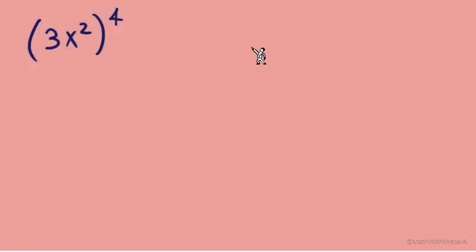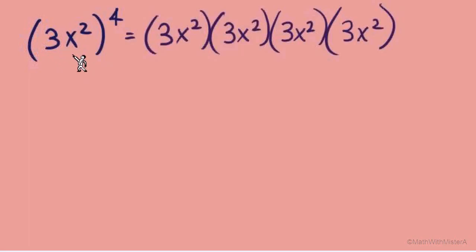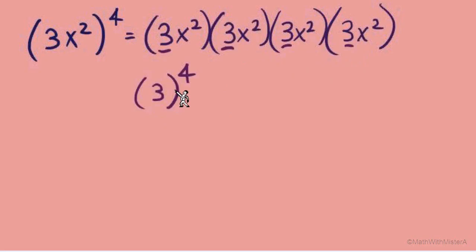Let's go to the next level and look at this example: 3x squared to the power of 4. This is more complex because we have a couple of different bases — a 3 and an x. Let's look at the expanded form: this is 3x squared multiplied over and over again four times. Since it's all multiplication, let's pull out 3 times 3 times 3 times 3 and write it as 3 to the fourth — that can be 81, but let's leave it as 3 to the fourth for now.